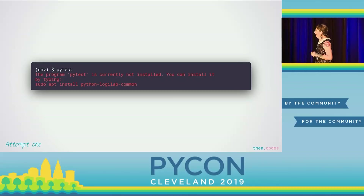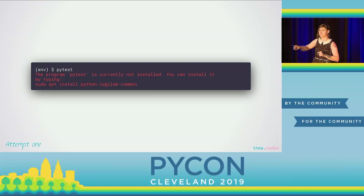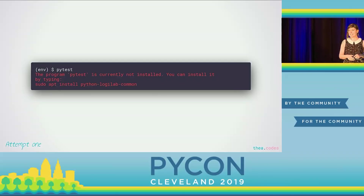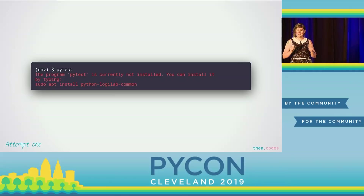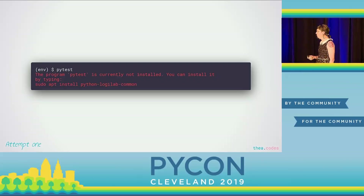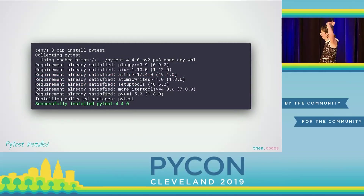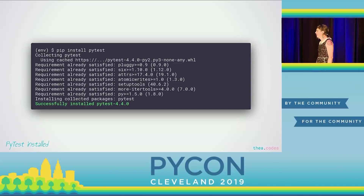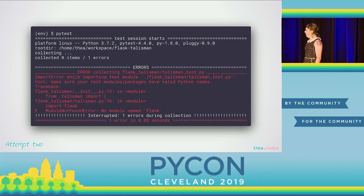I think it's pytest, so let's just try running pytest — that makes sense. Oh man. pytest isn't installed. I'd also like to point out this is an error message from Ubuntu that tells you to install a completely unrelated package, so don't do that. But we're not in trouble yet — we know pytest is a Python thing, so we can just pip install it. Pip install pytest. There's finally some green. We installed pytest. Let's try running it again. Oh great, more red.